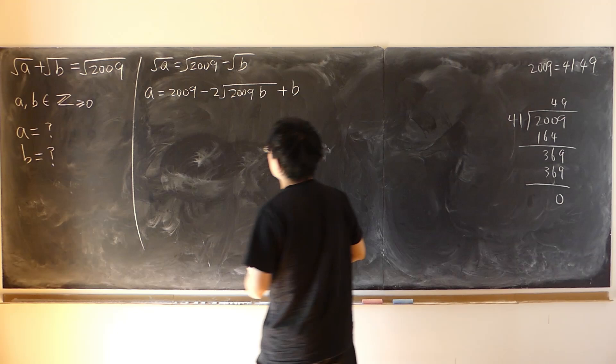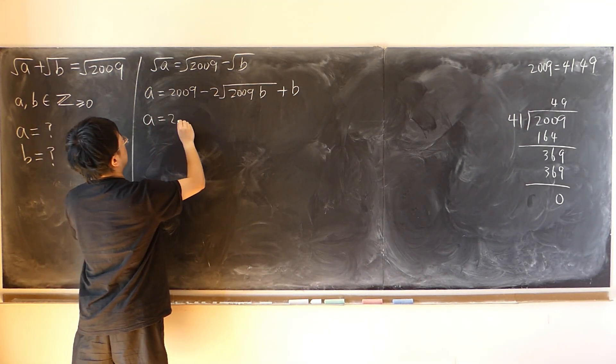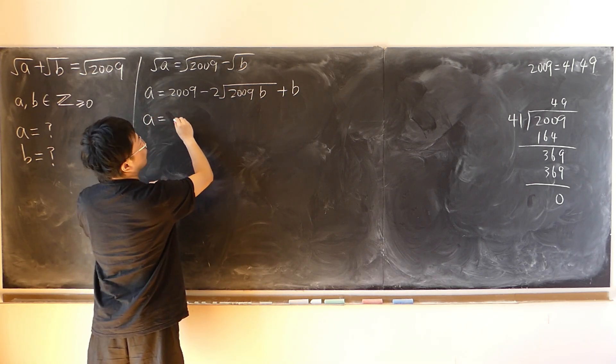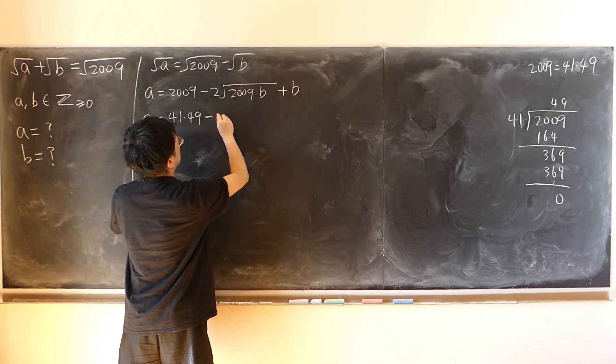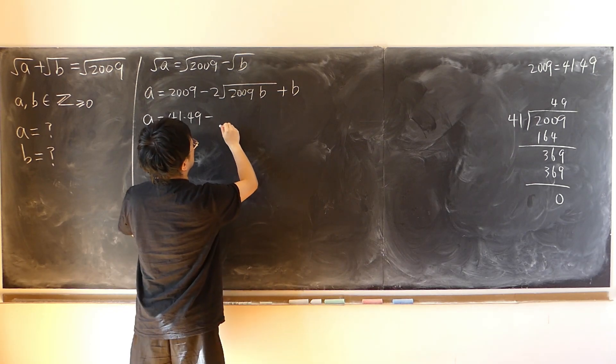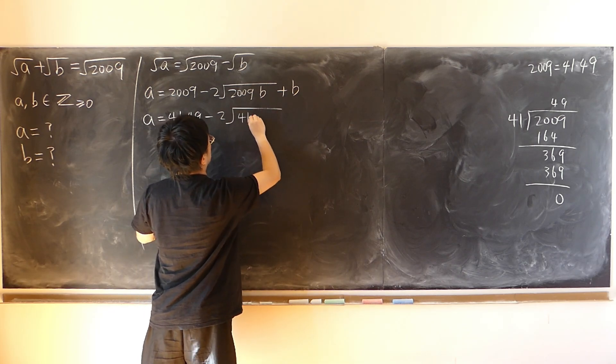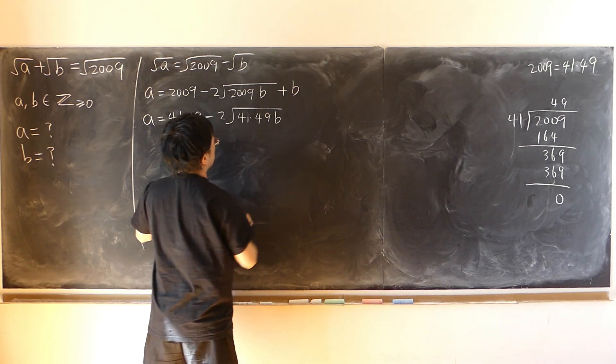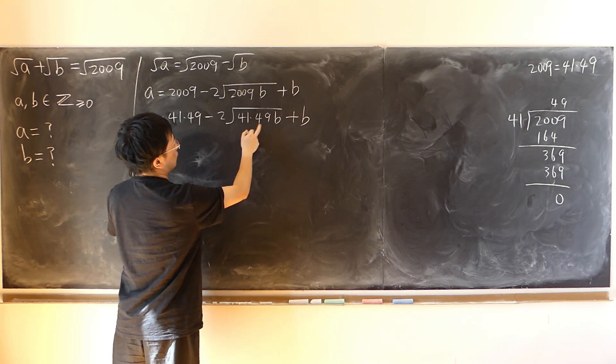No problem. It can be factored into that. So that way I can just rewrite it. 41 times 49 minus twice of, twice of 41 times 49 b.